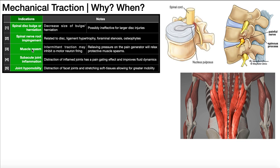The third indication is muscle spasms. Intermittent traction may inhibit alpha motor neuron firing — the alpha motor neurons are what innervate those muscles — so if you can inhibit those alpha motor neurons, you can relieve those muscle spasms. Relieving pressure on the pain generator will also relax those protective muscle spasms.